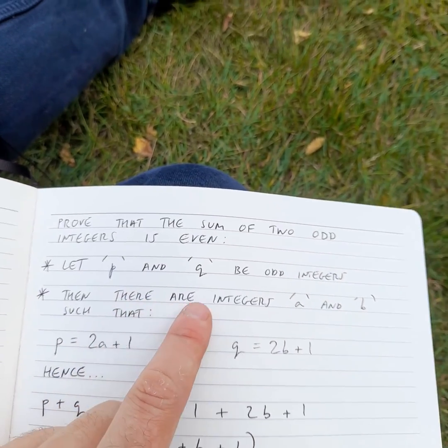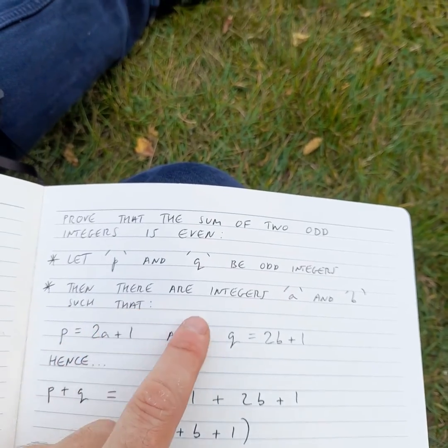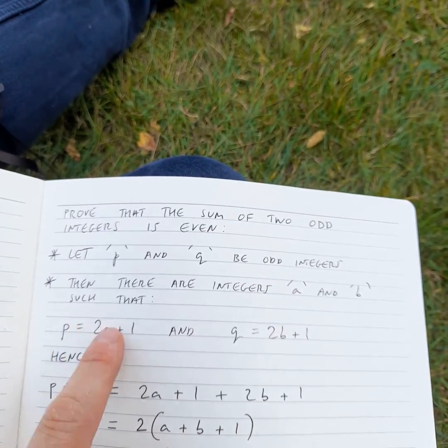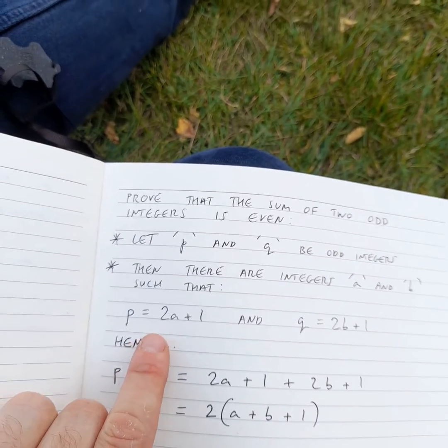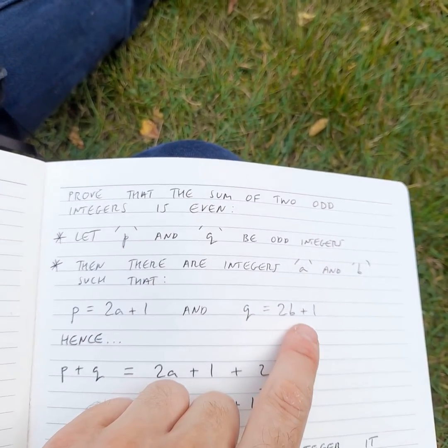Let p and q be odd integers. Then there are integers a and b such that p is 2a plus 1 and q is 2b plus 1.